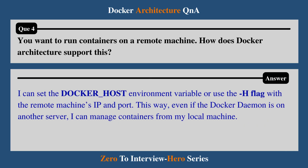Question 4: You want to run containers on a remote machine. How does Docker architecture support this? I can set the DOCKER_HOST environment variable or use the -H flag with the remote machine's IP and port. This way, even if the Docker daemon is on another server, I can manage containers from my local machine.